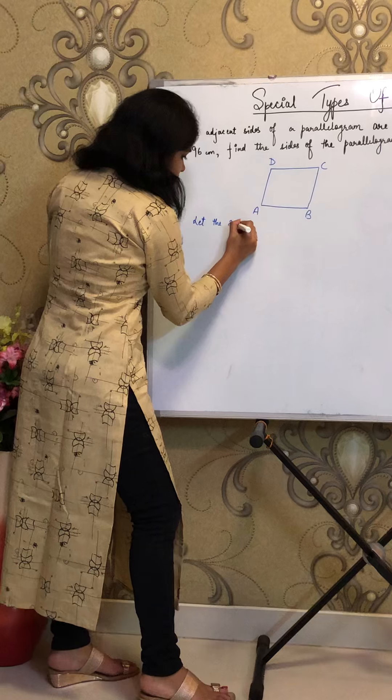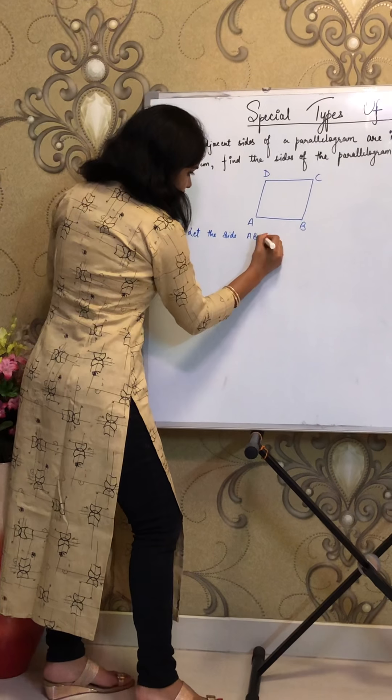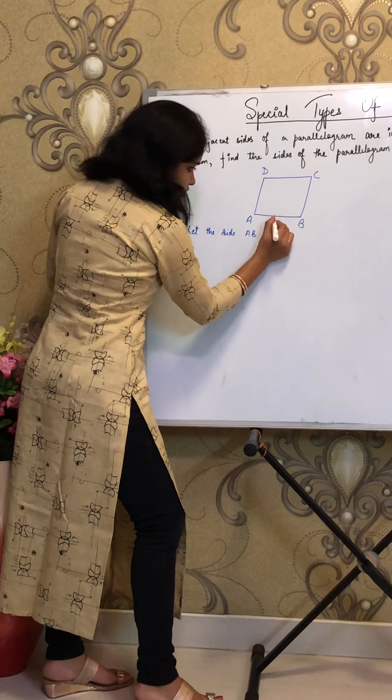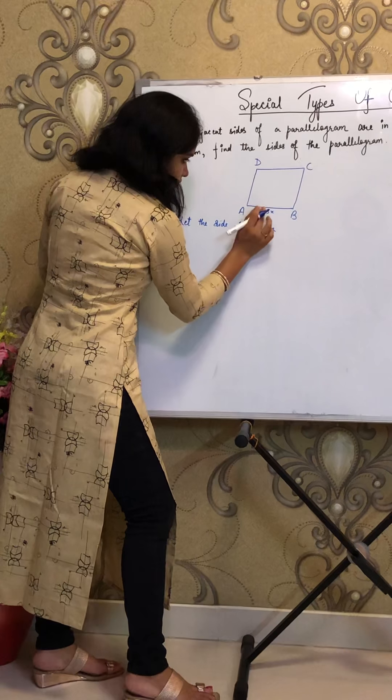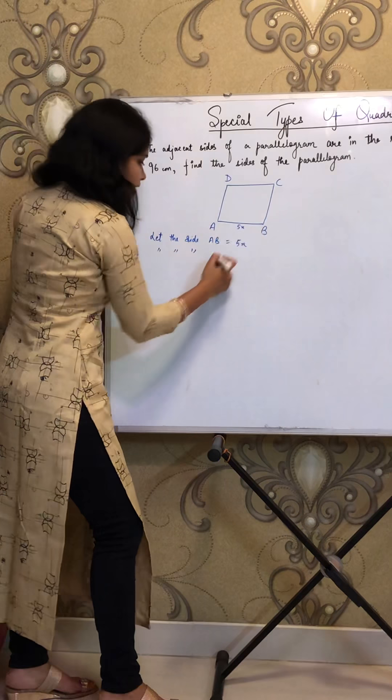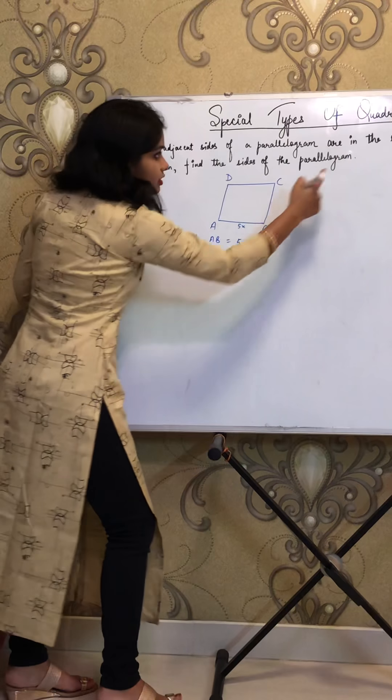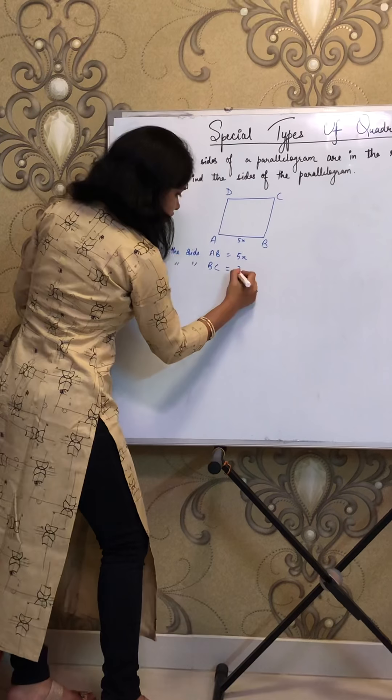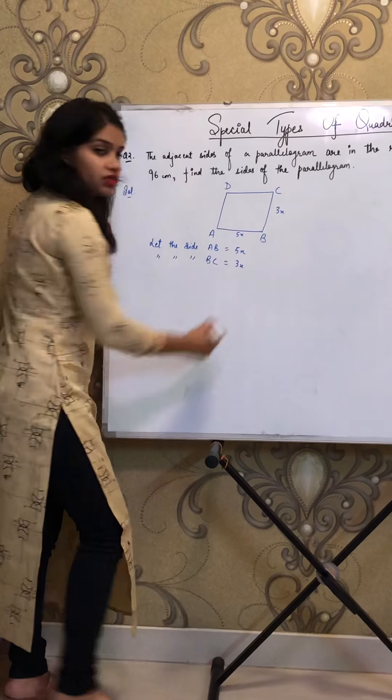Let the side AB as 5X, so this is 5X. And let the adjacent side BC as 3X, so this is 3X.